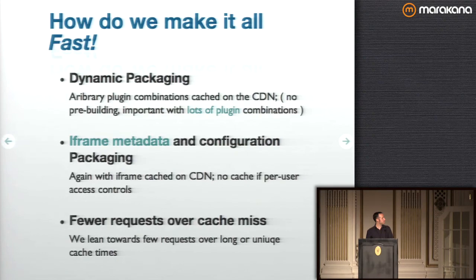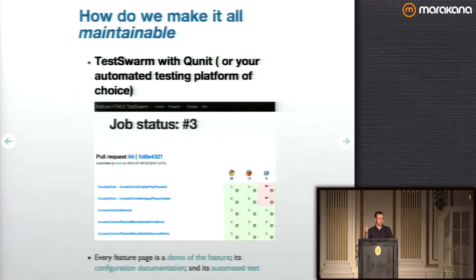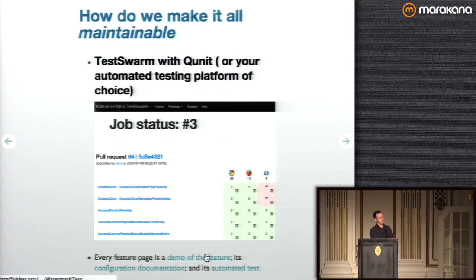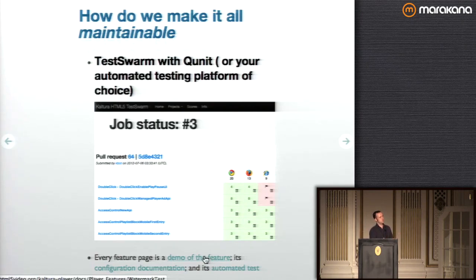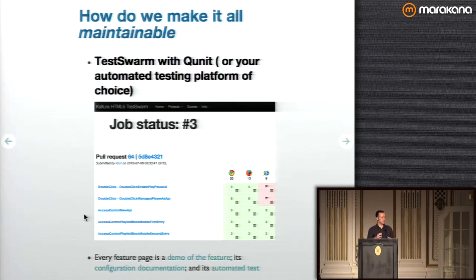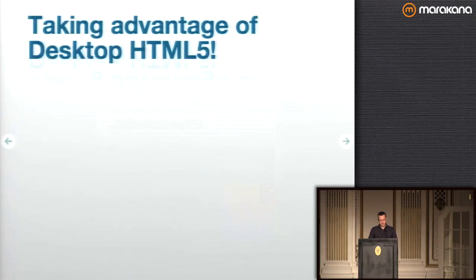Of course, you want to run automated tests and you want every feature to serve triple duty: a demo of the feature, the documentation for configuring it, and the automated test for it. So you have a unified manifest for every feature that encapsulates its entire lifecycle across all use cases you need to support. That's an important aspect of scaling out when you have lots of different people working on lots of different pieces — it keeps things relatively sane.